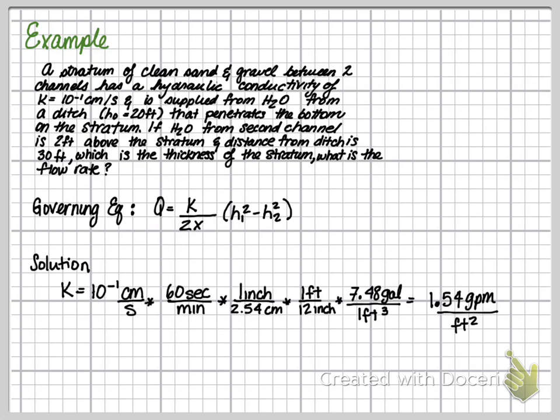Next, in order to solve this problem, some of the data is provided to us in metric units, while other is provided in English units. So we will convert the 10 to the negative 1 centimeters per second into feet per minute.